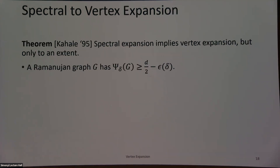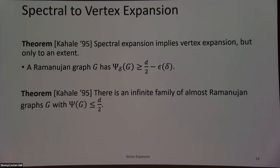Spectral expansion implies edge expansion. The question is: does it imply vertex expansion as well? The answer is yes, but not up to the lossless bound. Kahale showed that any Ramanujan graph has vertex expansion at least D/2. So we're looking for something like D−1, and instead we're getting D/2. Moreover, he showed an infinite family of almost-Ramanujan graphs where the vertex expansion is at most D/2. By almost Ramanujan, the second eigenvalue is 2√(D−1) plus a small factor.